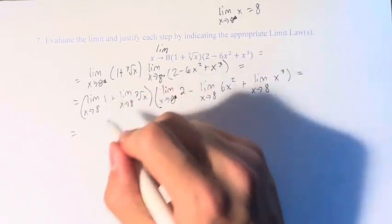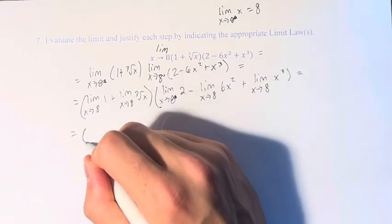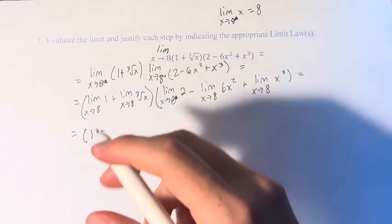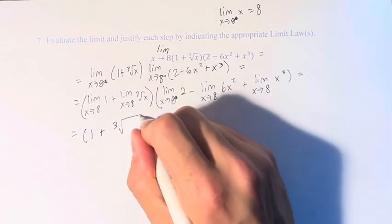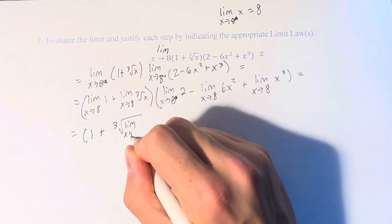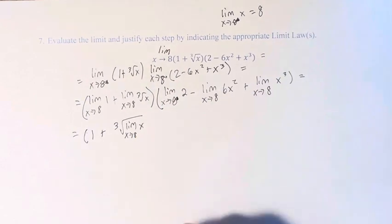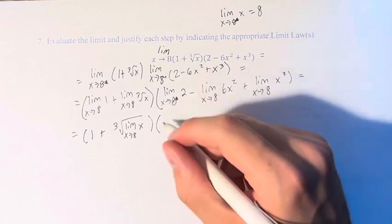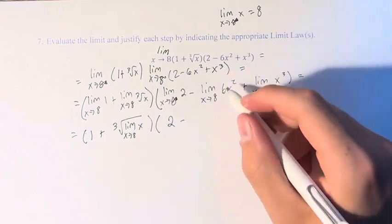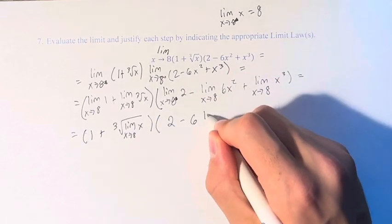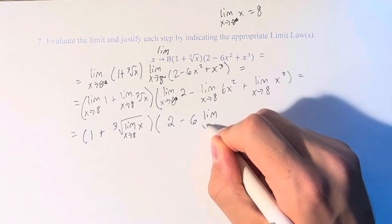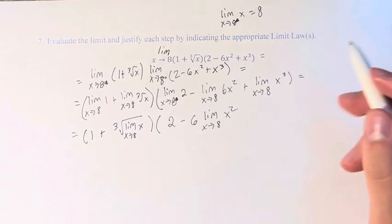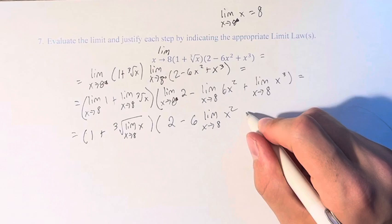The limit as x approaches 8 of 1 is just 1. The limit of the cube root of x is the cube root of the limit of x. Times the limit as x approaches 8 of 2, which is just 2. The limit of 6x squared is 6 times the limit of x squared. And the limit of x cubed is the limit of x cubed.